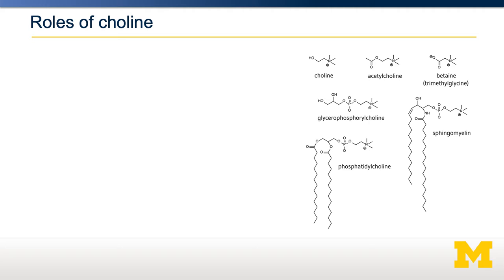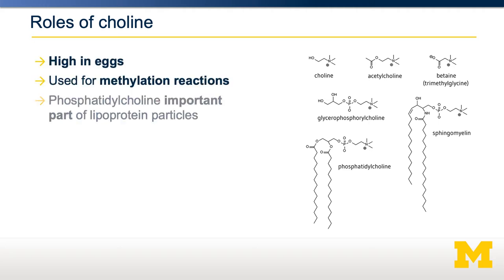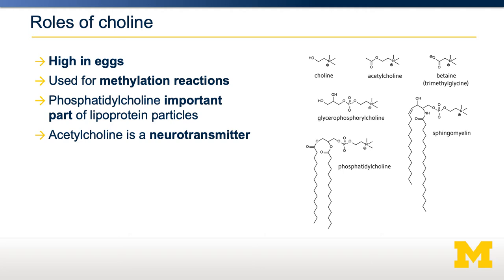The loss of betaine means that you do not have sufficient substrate — S-adenosylmethionine — for methylation reactions. Loss of phosphatidylcholine means you cannot generate lipoprotein particles. Loss of acetylcholine means you don't have the abundance of a particular neurotransmitter that you need. Therefore, the deficiency of choline can result in a whole spectrum of phenotypes that may seem unrelated.